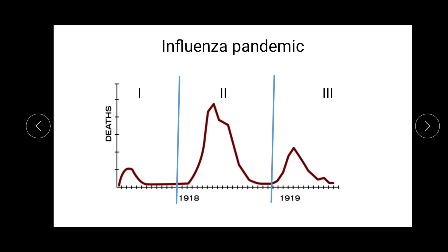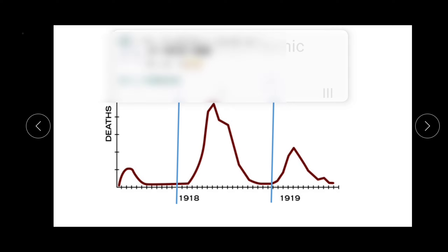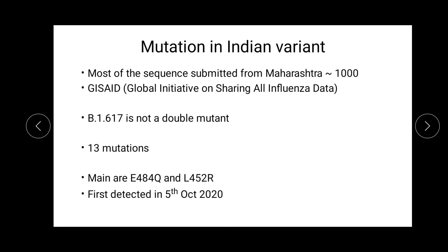Viruses seem to be more intelligent than human beings. We develop a method to stop the virus but they evolve — they become more intelligent and come back superior. The power behind their intelligence and superiority is mutation. Viruses mutate at a very high rate compared to human cells or any other cells. And compared to DNA viruses, RNA viruses mutate much faster. Coronavirus is an RNA virus, so let's see in our next few slides how this mutated virus has increased cases in India.